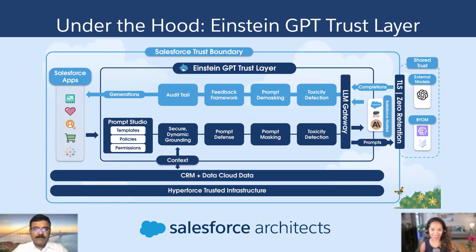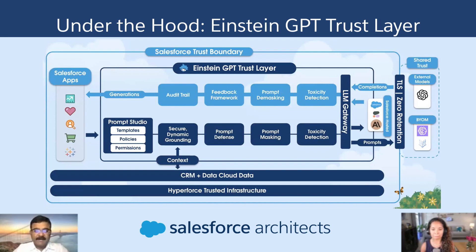This is our overall architecture for all the Einstein GPT use cases. As you can see, the outer light blue box is our Salesforce trust boundary, and within that is where we have our Einstein GPT trust layer. As we can see, there are multiple phases of functionality.